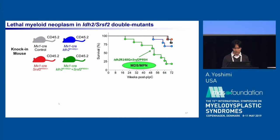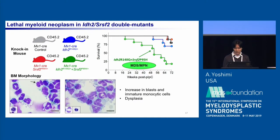These phenotypes were also recaptured in the double-knockin mice. The double mutant mice developed MDS-MPN, characterized by increases in blasts and immature monocytic cells, as well as dysplasia in erythroid and granulocytes.